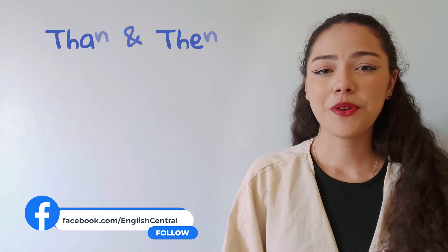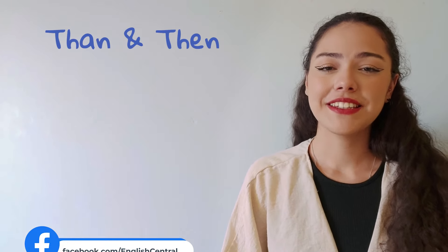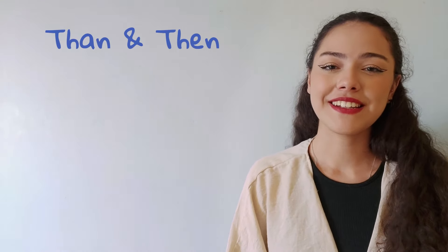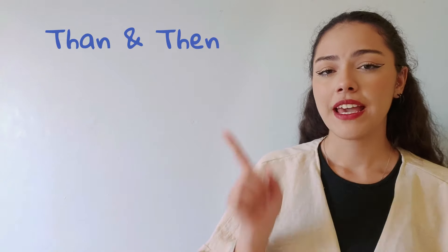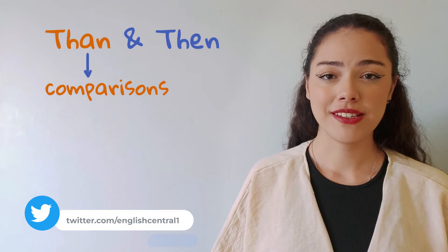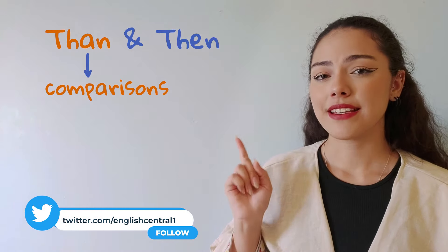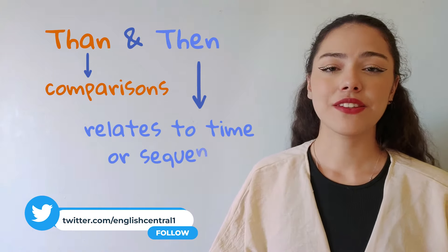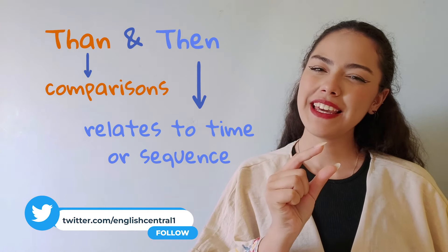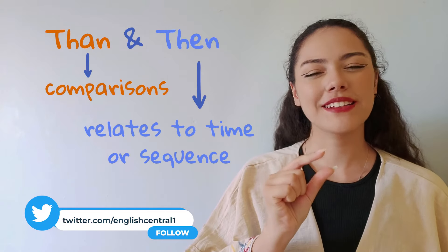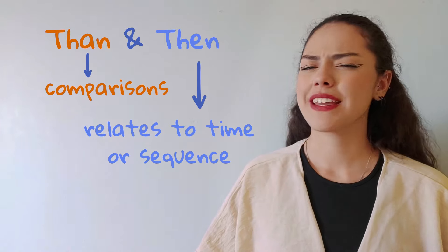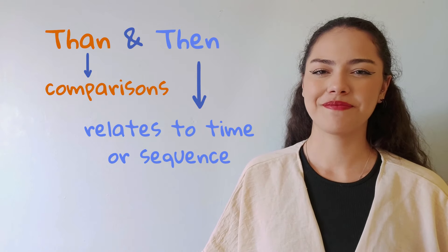So there you have it — the difference between than and then in English. Than is for comparisons and then relates to time or sequence. With a little bit of practice you'll master these two words in no time.